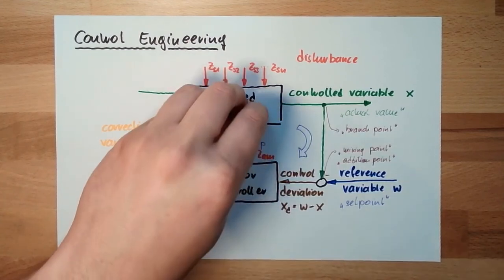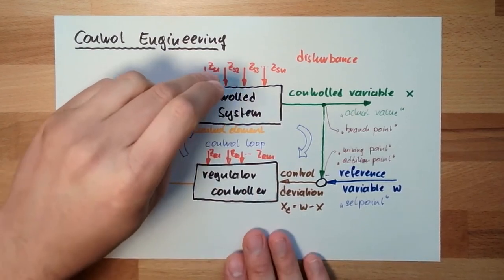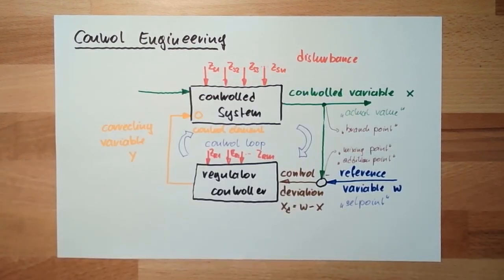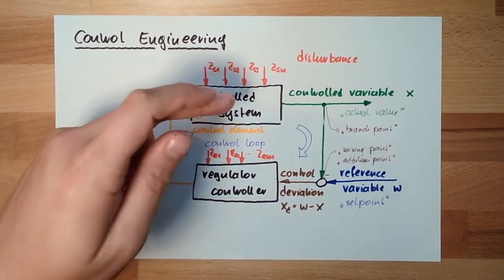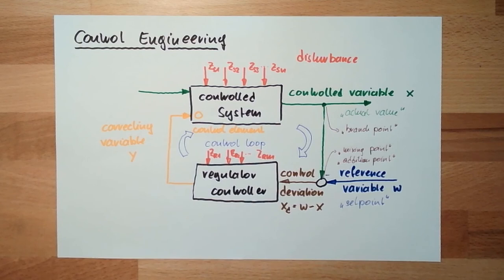So the control system is the car, and the regulator is something built into the car. What would be disturbances? Disturbances would be, for instance, a hill or wind. So those are the terms — you also have a list of them in your script. I hope you understood those terms and the meaning behind them. We will use these terms quite regularly, so we'll get to know them pretty well.